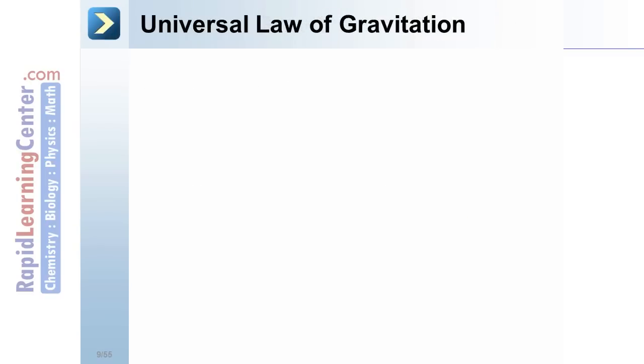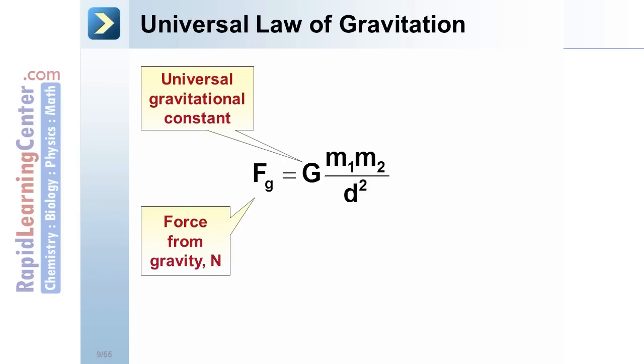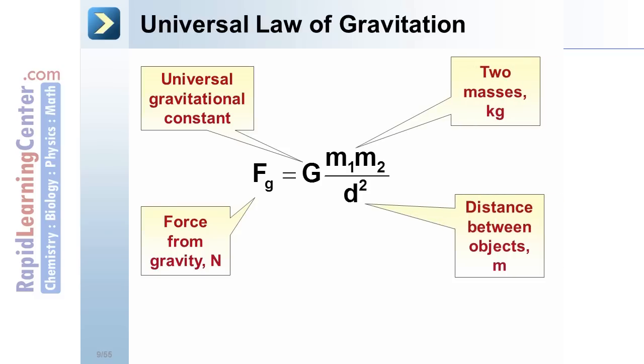Universal Law of Gravitation. The complete Universal Law of Gravitation is shown here. The force from gravity would be in newtons. The Universal Gravitational Constant was previously described. Both masses would be in kilograms, and the distance between those objects would be in meters.